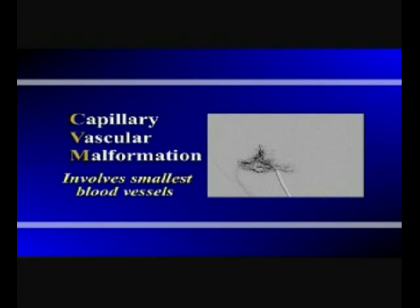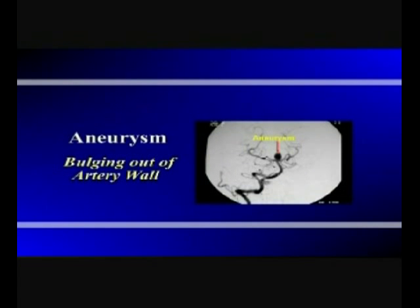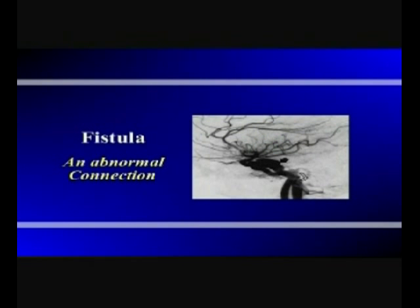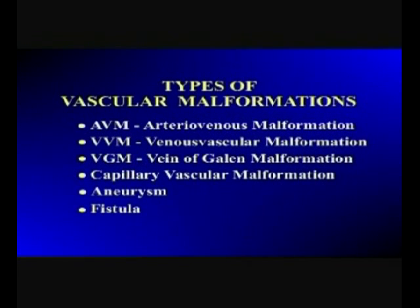Capillary vascular malformation, which involves the smallest blood vessels — the capillaries; an aneurysm, which is an abnormal bulging outward of an artery's wall; and a fistula, which means an abnormal connection — in this case between blood vessels. These distinctions are important because it's the type of malformation that determines the treatment approach.